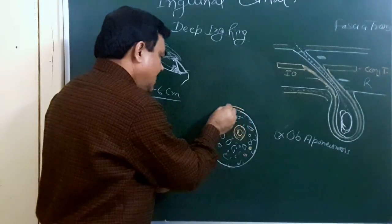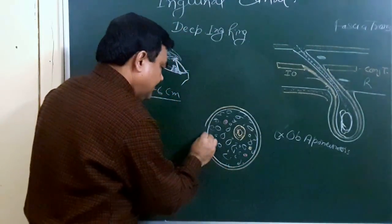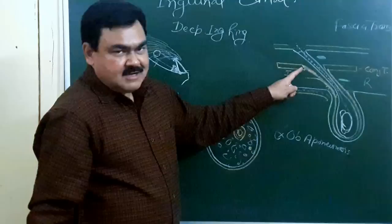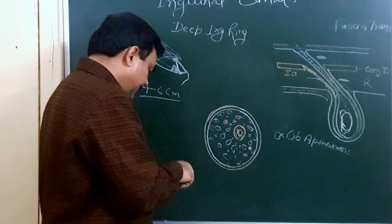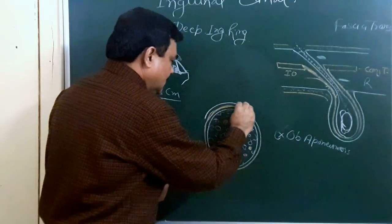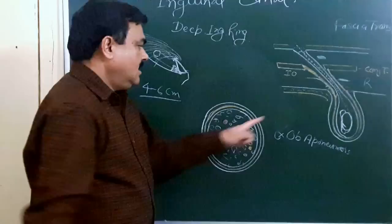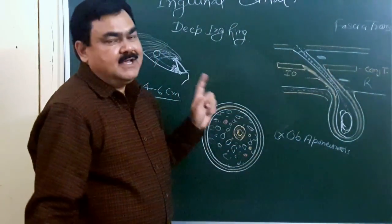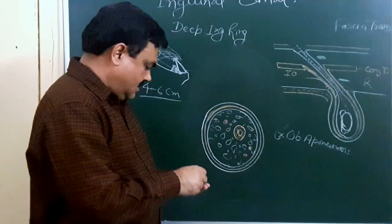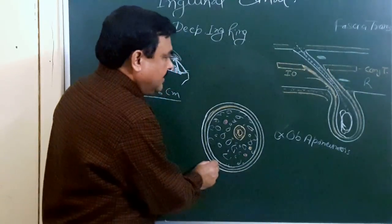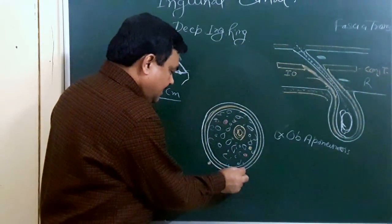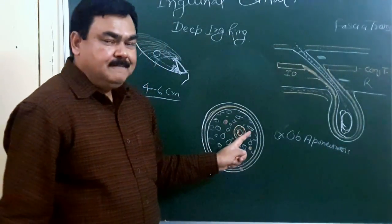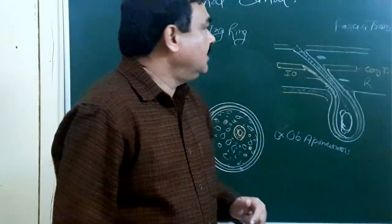Then there is the cremasteric fascia, within which cremasteric muscles arise from the internal oblique muscle and some fibers from transversus abdominis. The outermost covering is the external spermatic fascia, derived from the external oblique aponeurosis. The ilio-inguinal nerve and cremasteric artery are also present. These are the boundaries and contents of the inguinal canal and the spermatic cord and its coverings. This is all about the inguinal canal. Thank you.